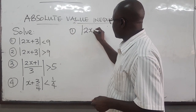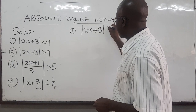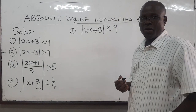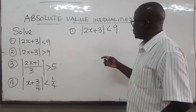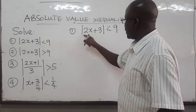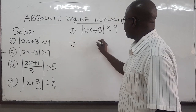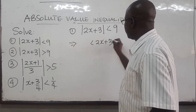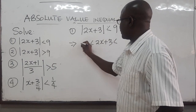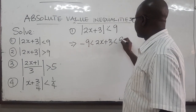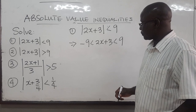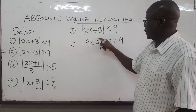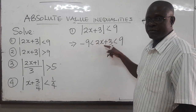Absolute value of 2x plus 3 is less than 9. Well, you can just use the definition that we learned about absolute values. This means that 2x plus 3 lies between negative 9 and 9. The plan is to solve for x — we want x to remain in the middle.